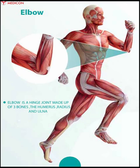Elbow is a hinge joint made up of three bones: the humerus, radius, and ulna. The ends of these bones are covered with cartilage, which has a rubbery consistency that allows the joints to slide easily against one another and absorb shock. The elbow is located between the arm and the forearm — more specifically between the humerus and the radius and ulna.